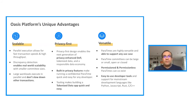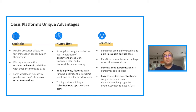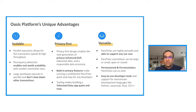The OASIS platform's unique advantages can be broken down into three different axes. On the scalability axis, parallel execution allows for fast transaction speeds and high throughput. We have a unique discrepancy detection mechanism that enables real world scalability with smaller compute committee sizes, and large workloads execute in parallel without slowing down other transactions. On the privacy axis, we are a privacy first design that enables the next generation of privacy enhanced DeFi, tokenized data, and a responsible data economy.